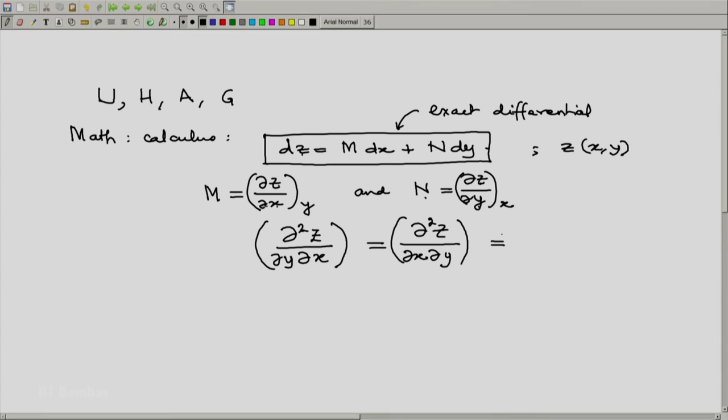Actually, the right hand side should properly be written like this. First, you take the partial of z with respect to y at constant x and then you take the second derivative, that means derivative of this first derivative with respect to x and this will be at constant y.